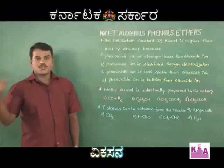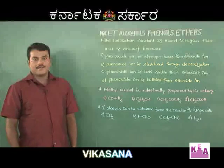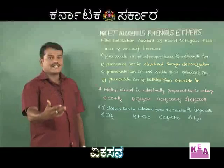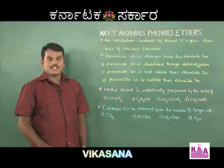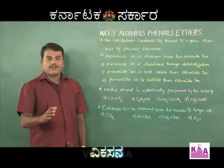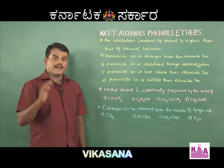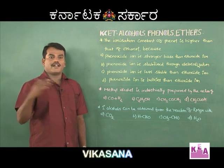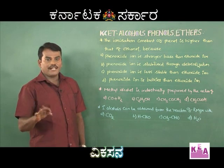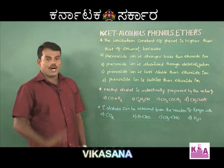Phenol undergoes ionization forming phenoxide ion and H⁺ ion. The phenoxide ion undergoes resonance stabilization due to delocalization of electrons present on the oxygen. Therefore, phenoxide ion is more stable than ethoxide ion formed upon ionization of alcohol. Because phenoxide ion is stabilized through delocalization, phenols are more strongly acidic than alcohols. The correct answer is option B.